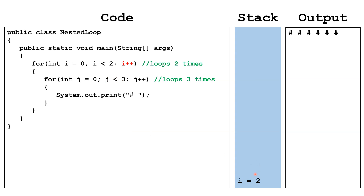We pop j off the stack. We get to the end of the outer loop, so we increment i by one — i becomes two. We check: is i less than two? It is not, so we terminate the outer loop and finish our program.